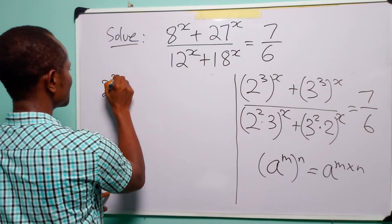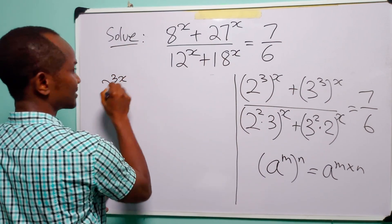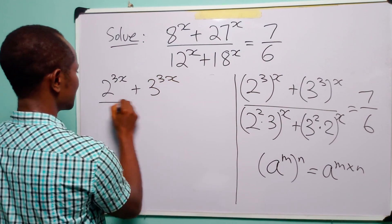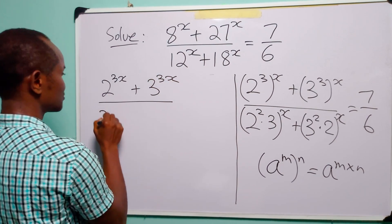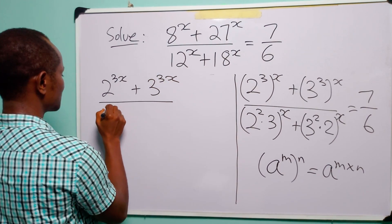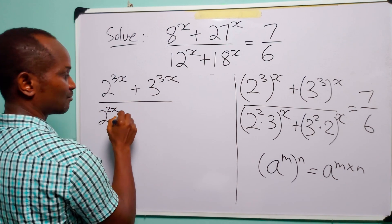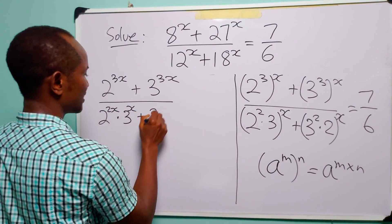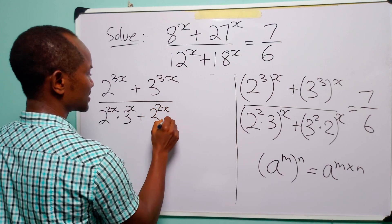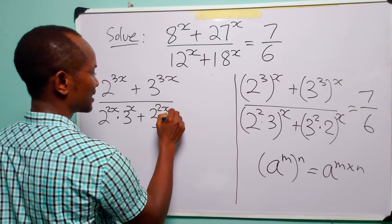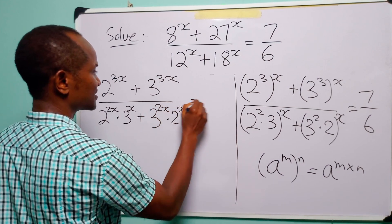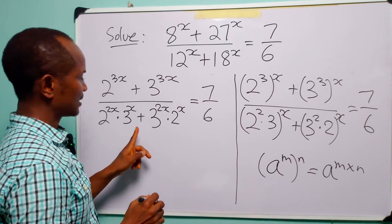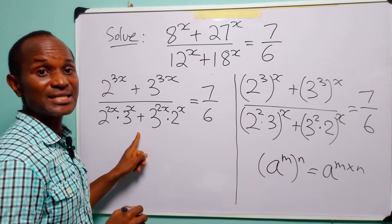we have 2 to the power of 3x plus 3 to the power of 3x, divided by 2 to the power of 2x multiplied by 3 to the power of x, plus 3 to the power of 2x multiplied by 2 to the power of x, is equal to 7 over 6. Now when you look at this equation, you will see that we have base 2 and we have base 3.